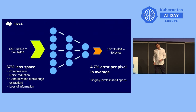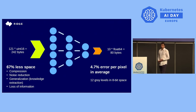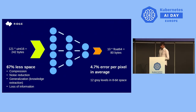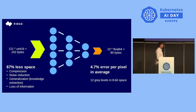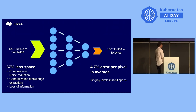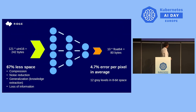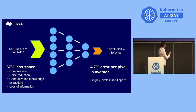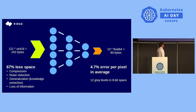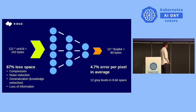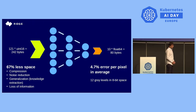The autoencoder compresses the data, generalizes the knowledge, and reduces noise. Of course, it also introduces error. In our case, as measured after training, the error is 4.7% per pixel on average, which may be understood as 12 gray levels in 8-bit space.